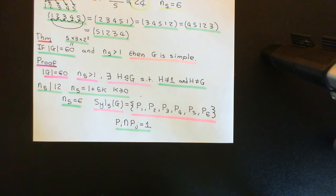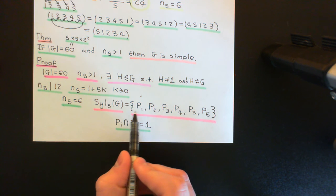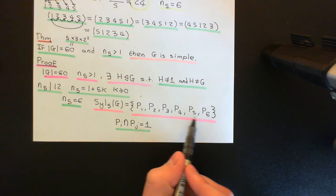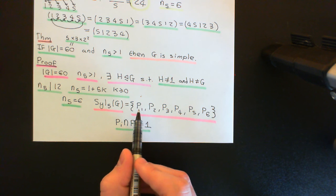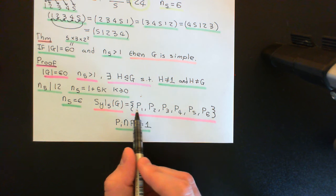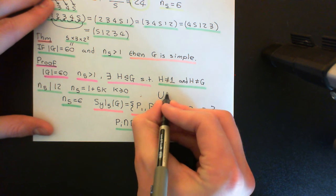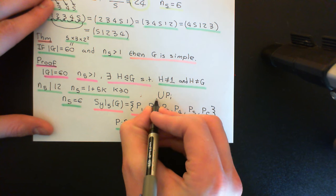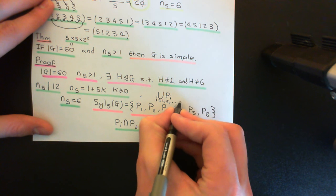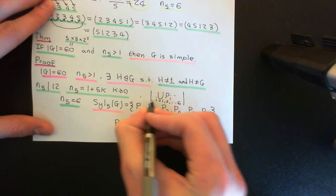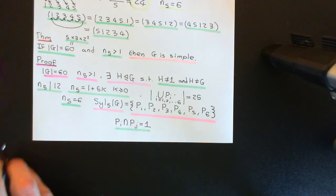All other four elements in each Pi are of order 5 and must be distinct across different Pi's. So the union of all six Sylow 5-subgroups gives the identity plus 24 elements of order 5 (4 × 6 = 24). If we take the union of P1 through P6, the result has order 25. This will become important in just a moment.